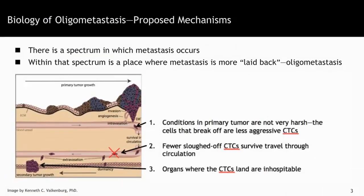Here we're going to talk about the biology of oligometastasis, which is a theory, so we don't know exactly how it works, but we have proposed mechanisms. There's a spectrum in which metastasis occurs, and within that spectrum it's believed there's a place where metastasis is more laid back and not as aggressive — that's oligometastasis. I have a figure from an earlier lecture on metastasis, with areas highlighted where the mechanism might be slightly different to explain this different type of metastasis.